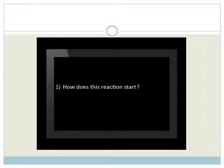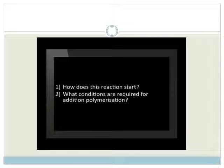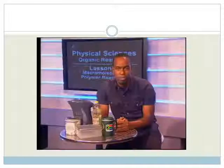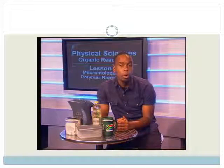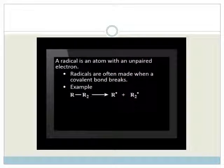Now, two questions remain. How does this reaction start? And what conditions are required for addition polymerization? To start an addition polymer, we begin with something called a radical. A radical is simply an atom with an unpaired electron. Radicals are often made when a covalent bond breaks. We represent the unpaired electron with a dot.